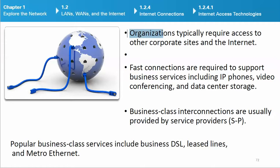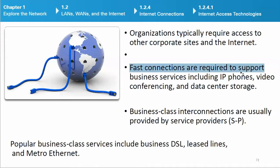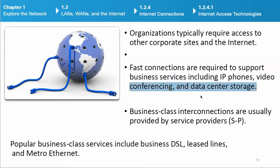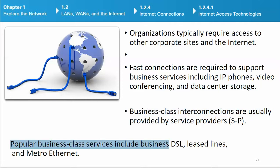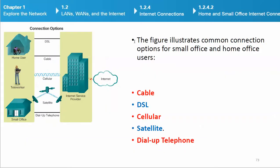Organizations typically require access to other corporate sites and the Internet. Fast connections are required to support business services including IP phones, video conferencing, and data center storage. Business class interconnections are usually provided by service providers. Popular business class services include business DSL, leased lines, and Metro Ethernet.